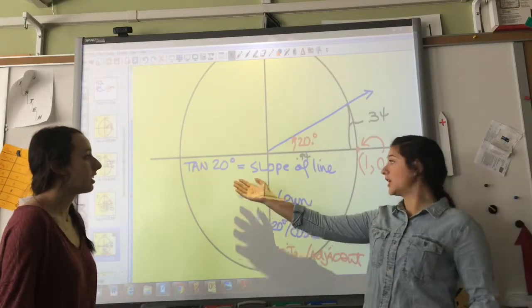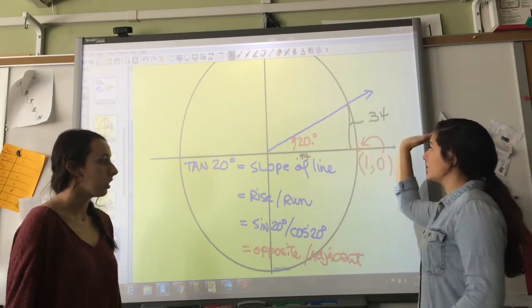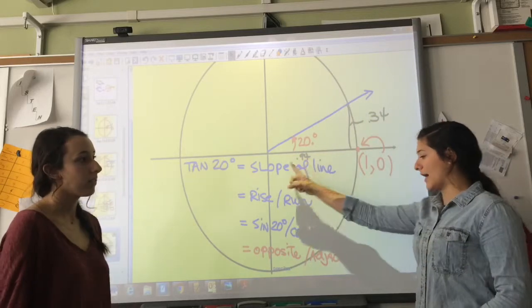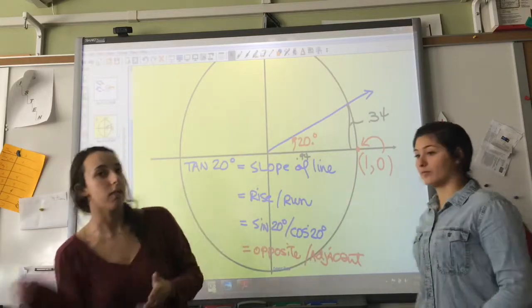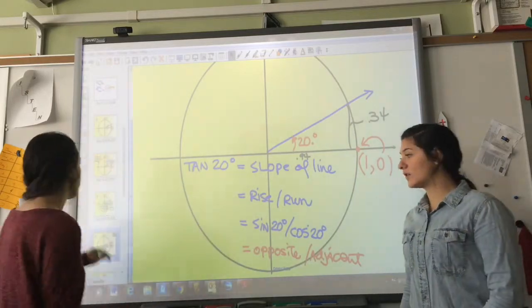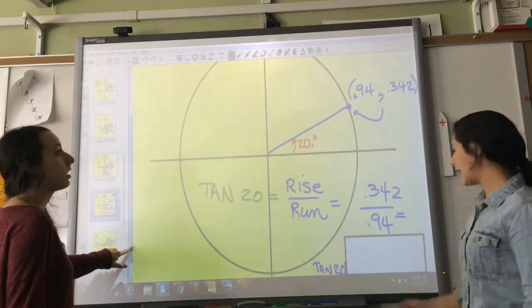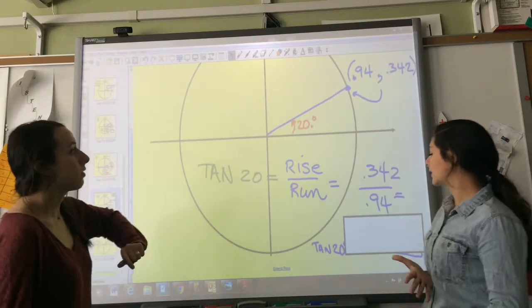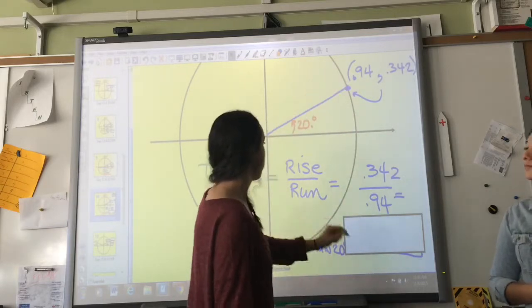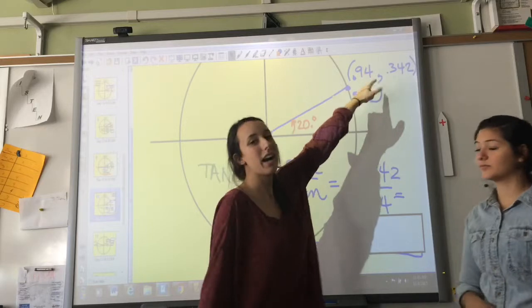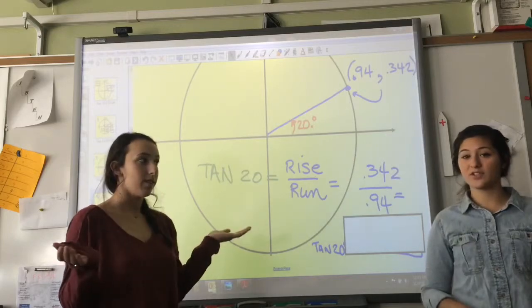So then, to figure out your tangent, it's your slope of the line. So it's your rise over your run. So it's your y over your x component, or sine over cosine, or your opposite over your adjacent in the TOA of SOHCAHTOA. So here you have, you know that your x was 0.94, and you have that your y was 0.342. So you plug that in, 0.342 over 0.94. So let's see what you can get.